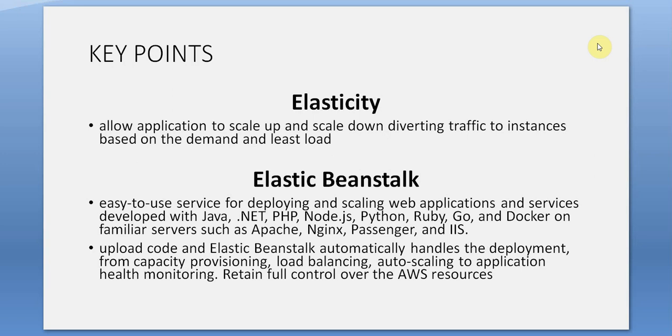Elasticity: allows applications to scale up and down, diverting traffic to instances based on demand and least load. Elastic Beanstalk is an easy-to-use service for deploying and scaling web applications and services. Supports Java, .NET, PHP, Node.js, Python, Ruby, Go, and Docker on servers such as Apache, Nginx, Passenger, and IIS. Upload your code and Elastic Beanstalk automatically handles capacity provisioning, load balancing, auto-scaling, and application health monitoring. You retain full control over your AWS resources.